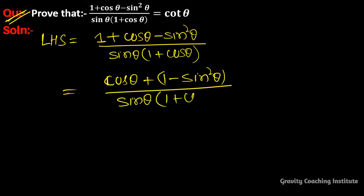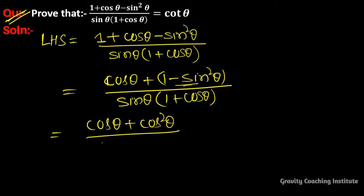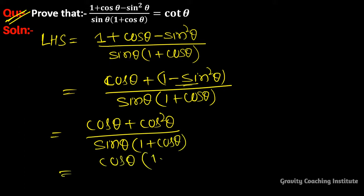So this equals (cosθ + cos²θ) / (sinθ · (1 + cosθ)). Taking cosθ as a common factor in the numerator, we get cosθ · (1 + cosθ) / (sinθ · (1 + cosθ)).